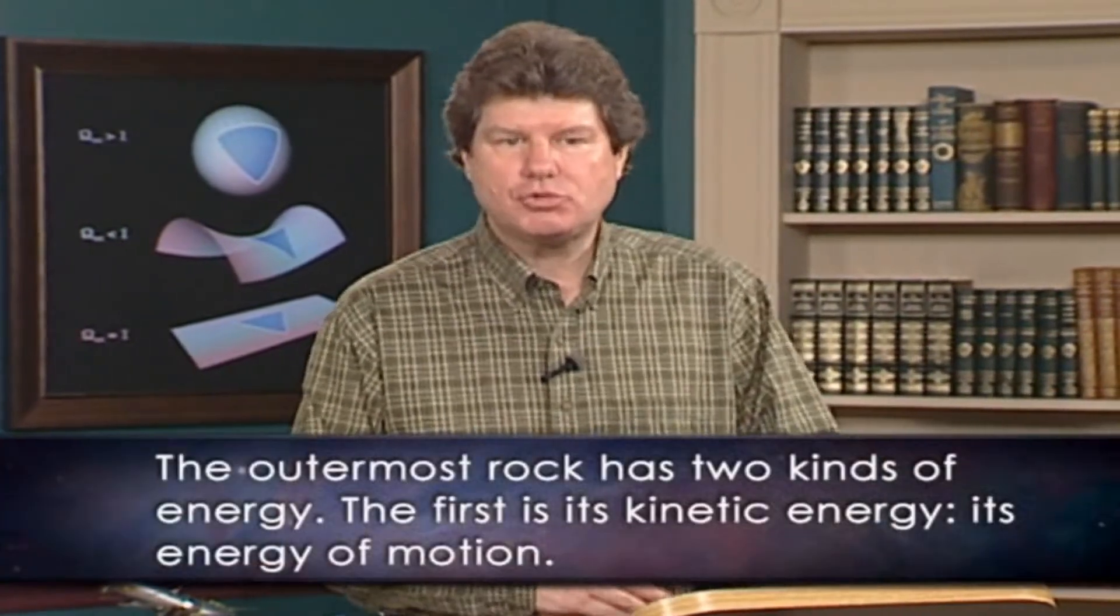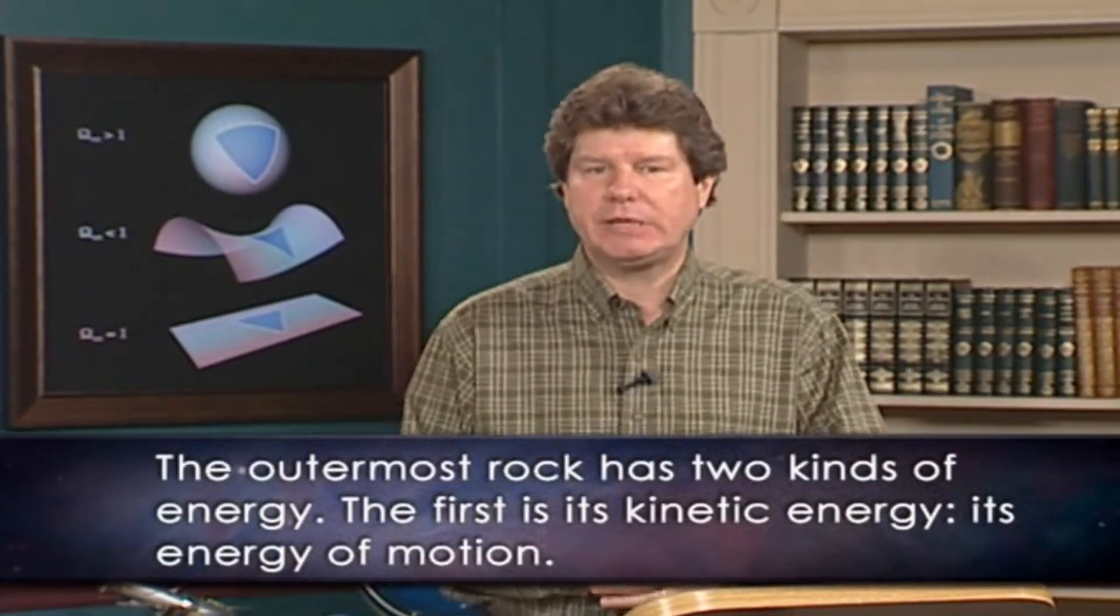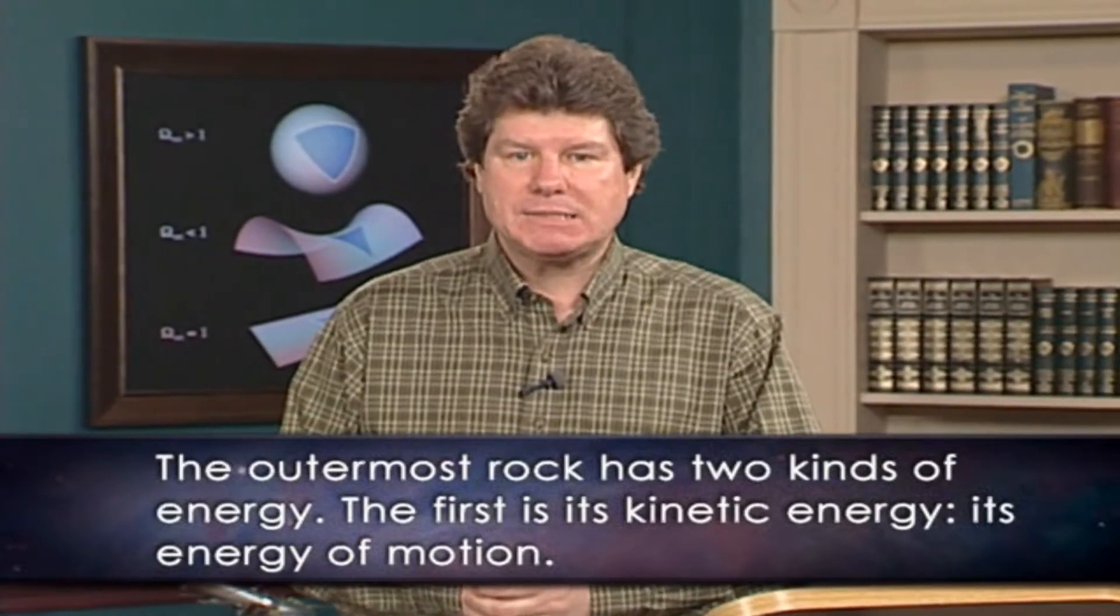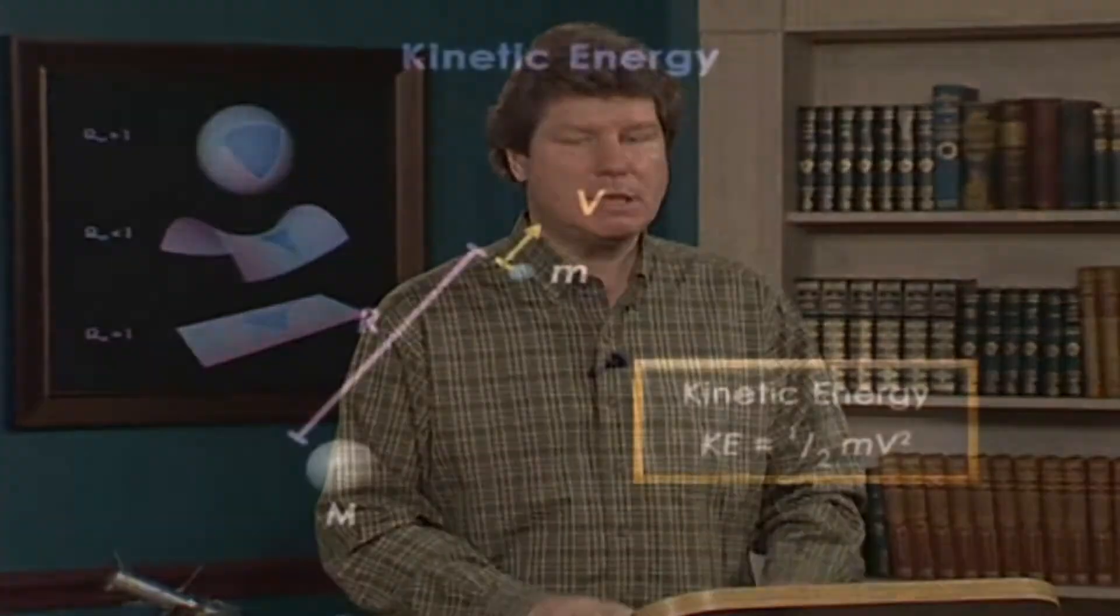Now it's important to realize that the outermost rock has two kinds of energy. The first is its kinetic energy, its energy of motion. If it hit you, this energy would hurt you. In math terms, kinetic energy, KE, is given by 1/2 mv² where little m is the rock's mass and v is the rock's velocity or speed.